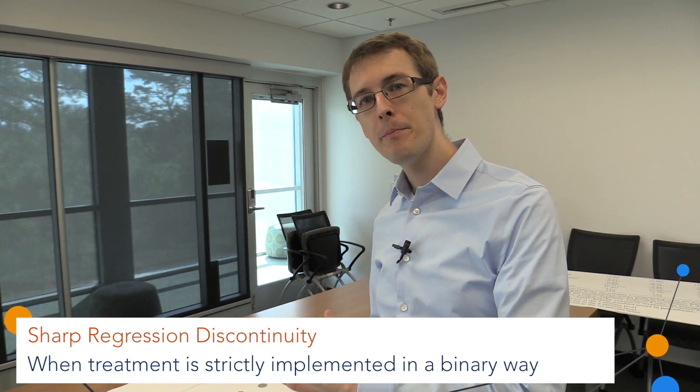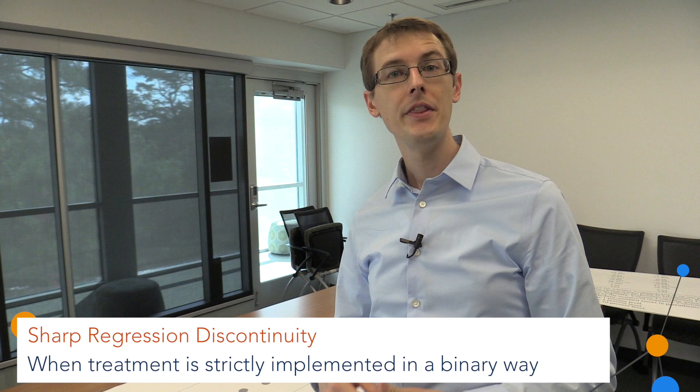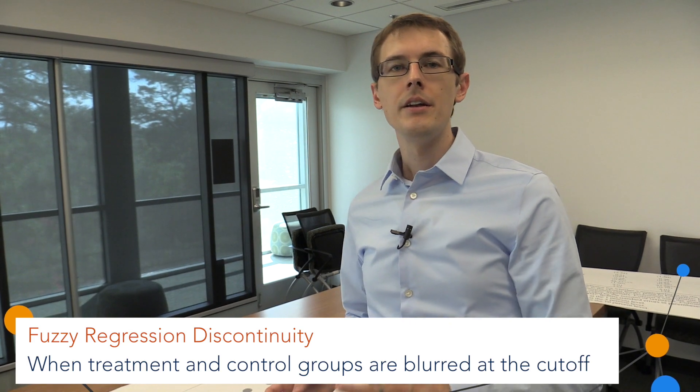So which side of the cutoff you're on completely determines your treatment. The other kind is called a fuzzy RDD, and that's when on one side of the cutoff, you're very likely to get treated, but you might not, and on the other side of the cutoff, you're very likely not to get treated, but you might actually get treated. So which side of the cutoff you're on does not completely determine whether you get treated or not.